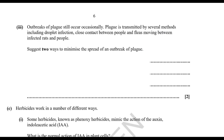Outbreaks of plague still occur occasionally. Plague is transmitted by several methods including droplet infection, close contact between people, and fleas moving between infected rats and people.